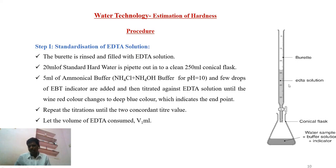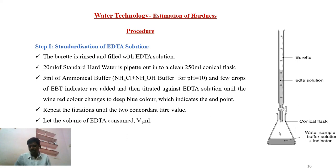We start the titration by adding EDTA dropwise and swirling the flask continuously. After a particular point, the metal-EBT complex is decomposed, the metal-EDTA complex is formed, and the EBT released shows blue colour — that means colour change from wine red to blue. At that end point, we note down the volume of EDTA consumed, recorded as V1 ml. We repeat this titration until we get concordant values.